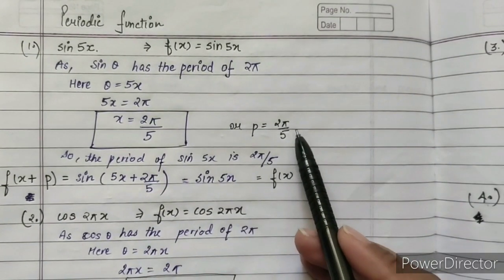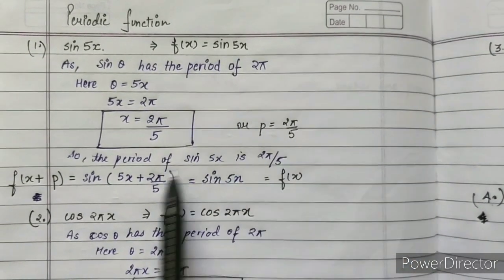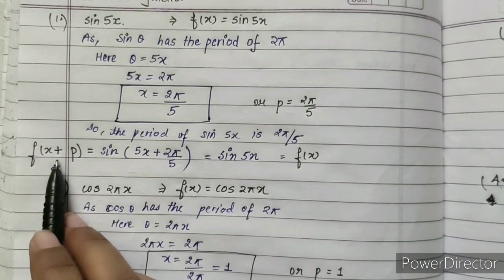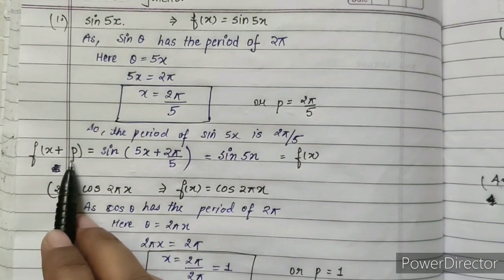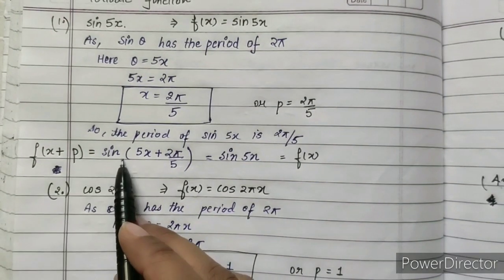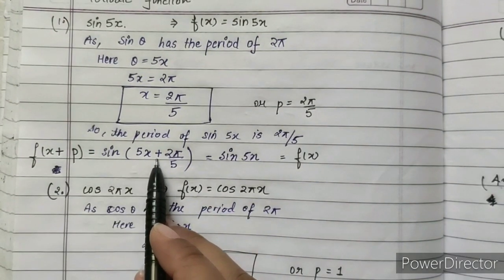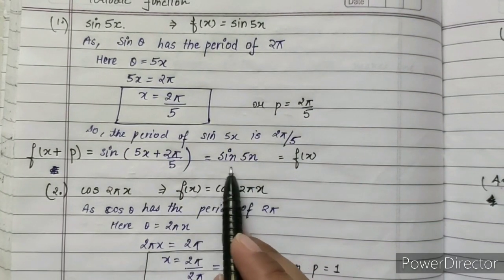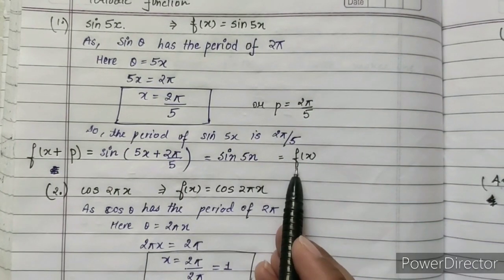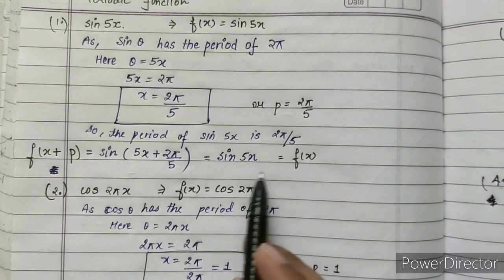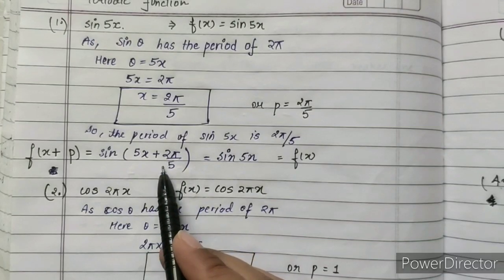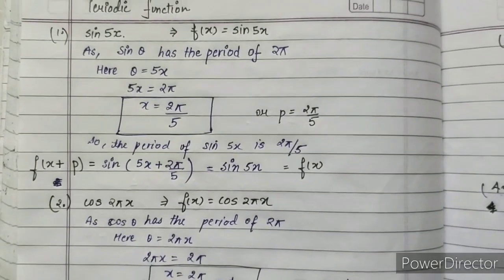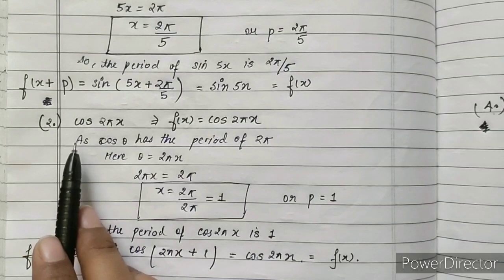So the period of sin(5x) is 2π/5. We conclude by writing: f(x + p) = sin(5x + 2π/5) = sin(5x) = f(x). Therefore, T equals 2π/5.